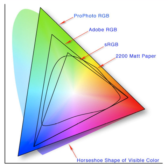Adding a specific mapping function between a color model and a reference color space establishes within the reference color space a definite footprint, known as a gamut, and for a given color model this defines a color space. For example, Adobe RGB and sRGB are two different absolute color spaces, both based on the RGB color model.